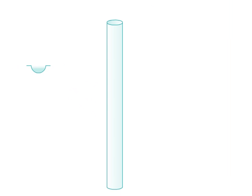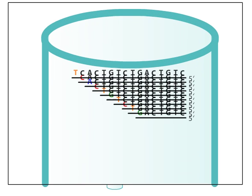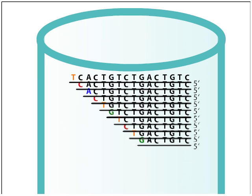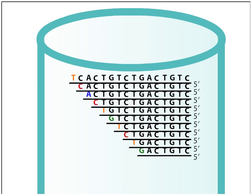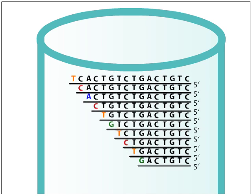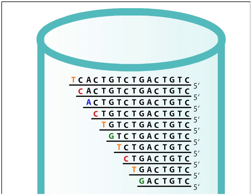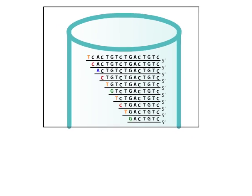The resulting fragments are denatured so that they separate from their template strands and placed in a small capillary tube gel for electrophoresis. The gel slows down the DNA fragments, which are negatively charged, as they migrate toward the positive electrode. The largest fragments move the slowest and the smallest fragments move the fastest through the gel. Although we show only one copy of each fragment's size, in reality there are many copies.